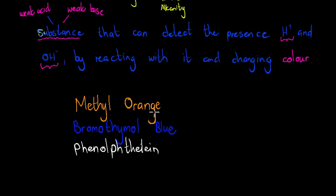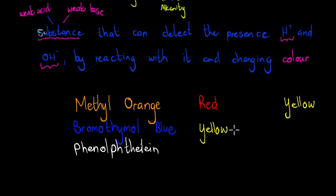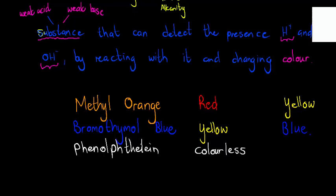What you need to remember are the color changes. Methyl orange changes from red to yellow. Bromothymol blue changes from yellow to blue. And phenolphthalein goes from colorless to pink.